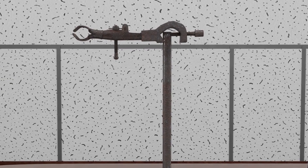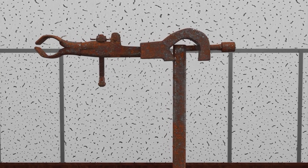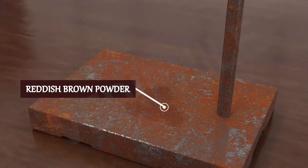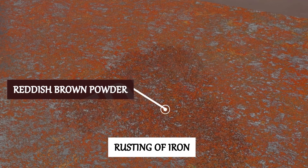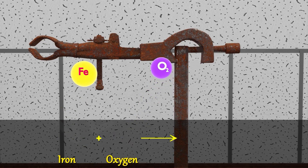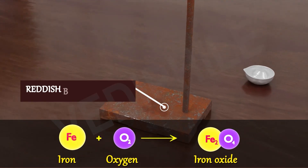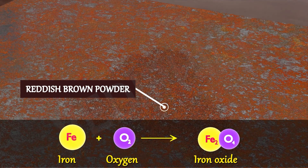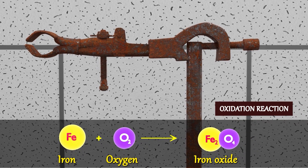Iron objects are shiny when new, but over time they get covered in rust. The rust is a reddish-brown powder, which is iron oxide. This is an oxidation reaction, because iron is oxidized by reacting with atmospheric oxygen to form iron oxide.